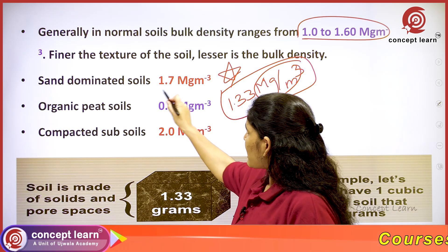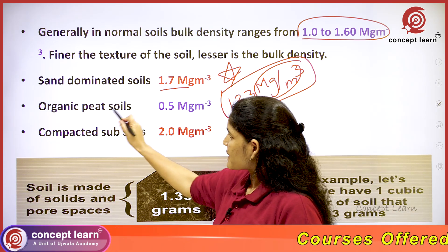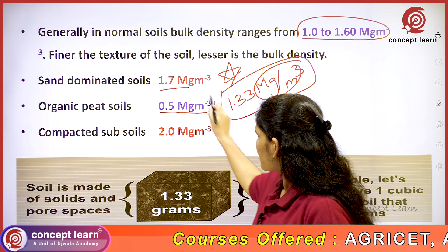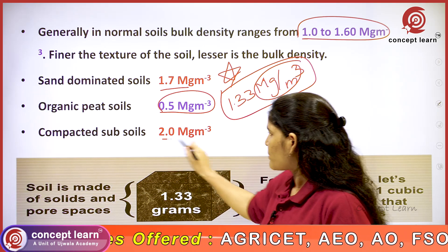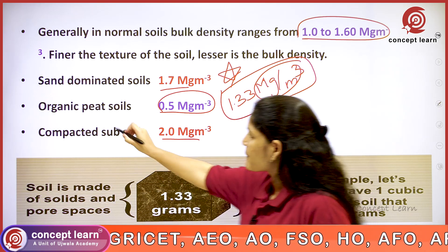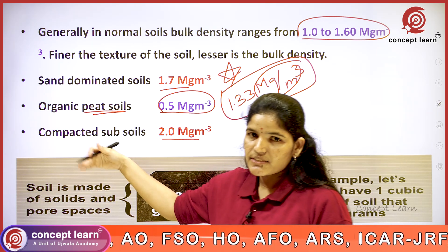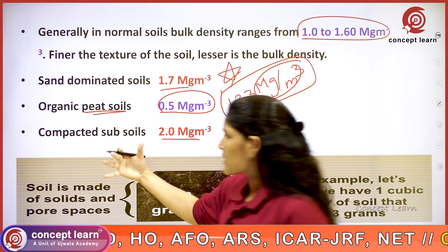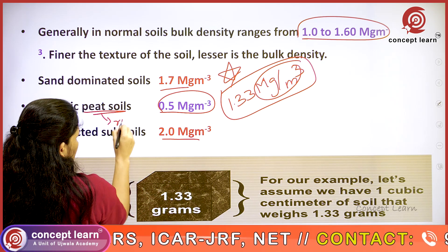Sand-dominated soils have more bulk density. Whereas organic peat soil bulk density is 0.5 megagram per meter cube, and compacted subsoils have 2 megagram per meter cube. Organic peat soils are soils which are rich in organic matter content.